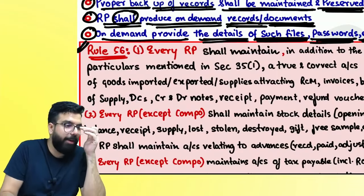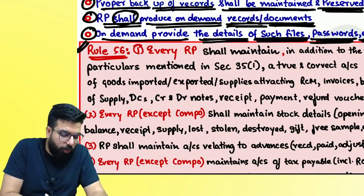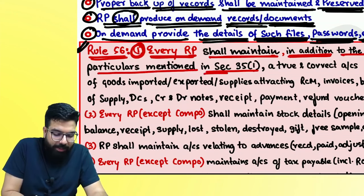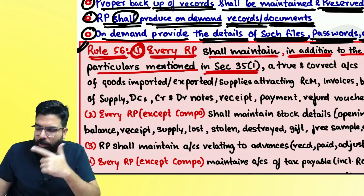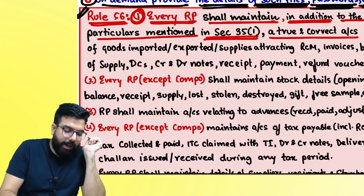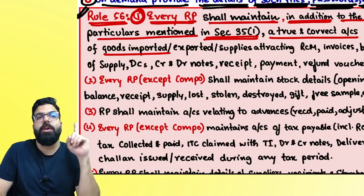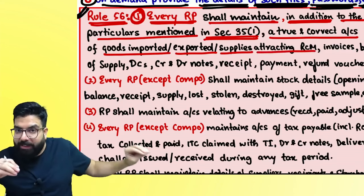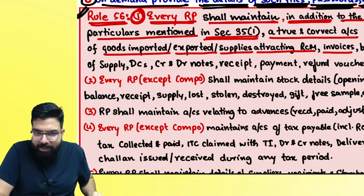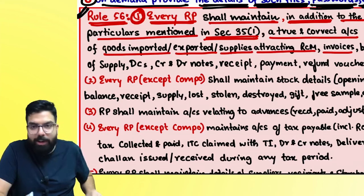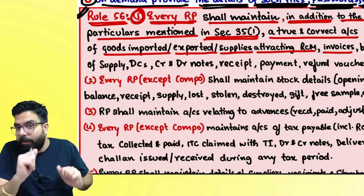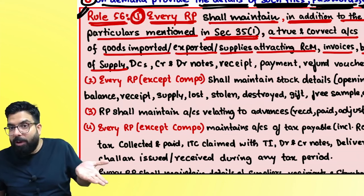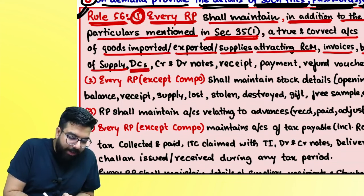Rule 56.1: Every registered person shall maintain, in addition to the particulars mentioned in Section 35.1 (PCOS), true and correct accounts of: goods imported, goods exported, supplies attracting RCM, invoices, bill of supply, delivery challan, credit note, debit note, receipt voucher, payment voucher, and refund voucher. All these documents must be maintained — you don't tear and throw them.